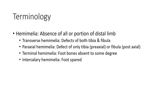Hemimelia is the absence of all or a portion of a distal limb. Transverse hemimelia involves defects of both tibia and fibula. Paraxial hemimelia involves defects of only the tibia or fibula — postaxial affects the fibula.